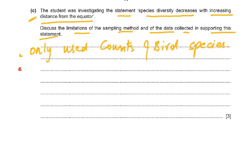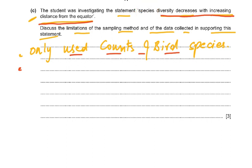The statement says species diversity decreases with increasing distance from the equator — here we are talking of every species. But that is wrong because we were only discussing birds. Only counts of bird species were used. How can you make a generalized statement that all species are going to be affected? So it is very important — if you didn't read this correctly, you didn't come up with this point.